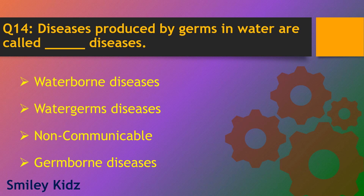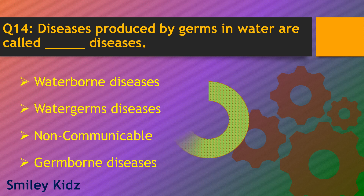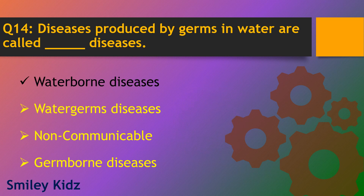Question number 14. Diseases produced by germs in water are called what? Options are waterborne diseases, water germs diseases, non-communicable diseases and germborne diseases. The right answer is waterborne diseases. Diseases produced by germs in water are called waterborne diseases.